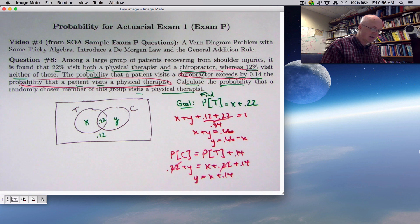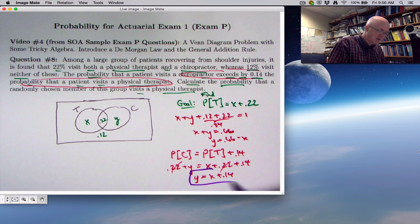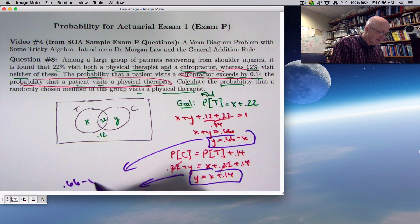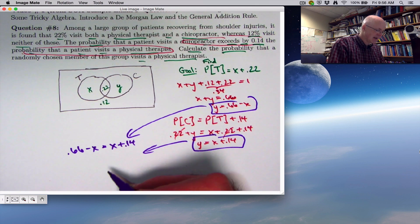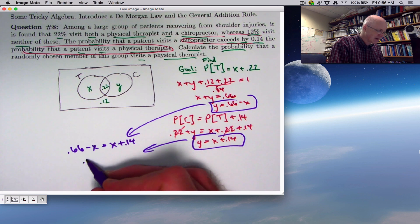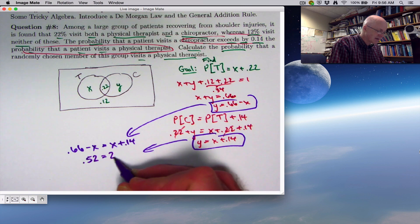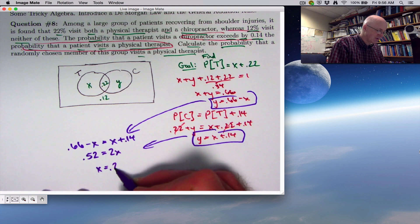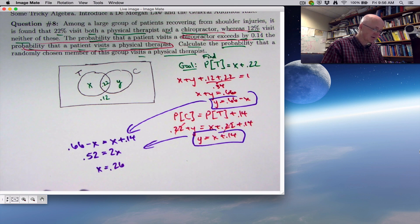We can cancel the 0.22s and say Y is X plus 0.14. We're getting pretty close to being done. We can now combine these equations to say that 0.66 minus X equals X plus 0.14. Add X to both sides and subtract 0.14 from both sides: 0.52 equals 2X, so X is 0.26. Careful, that's not the answer to the question.